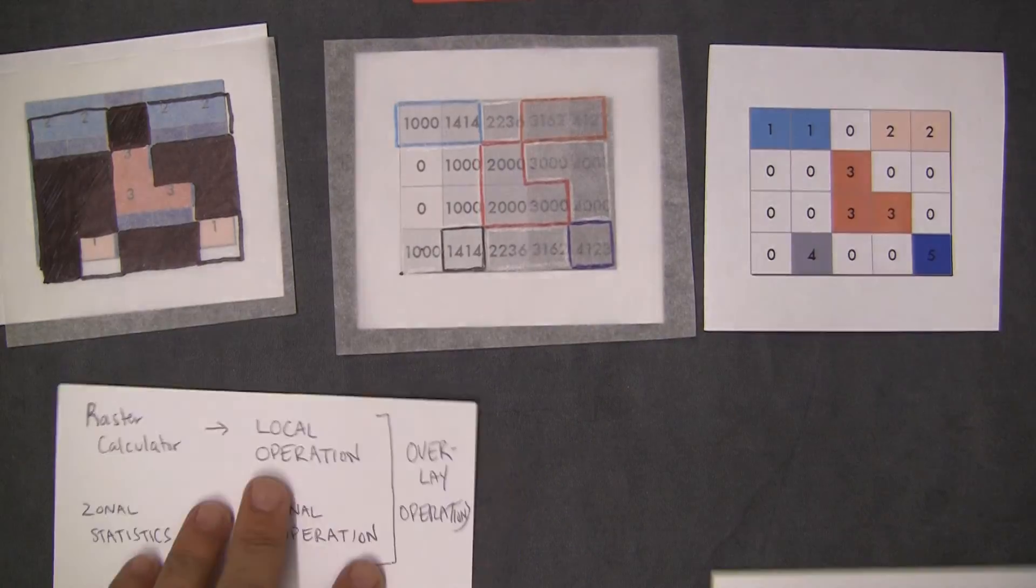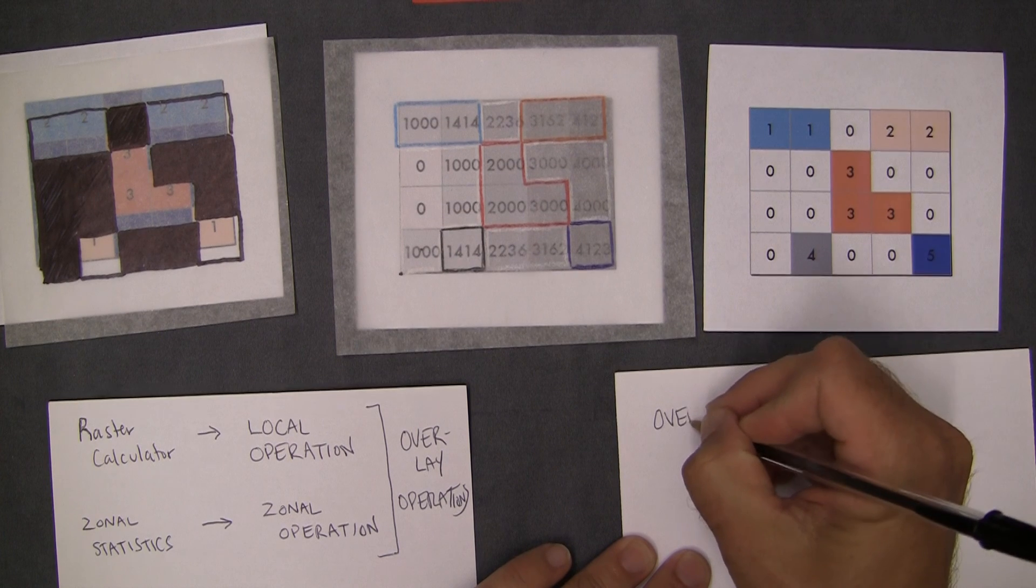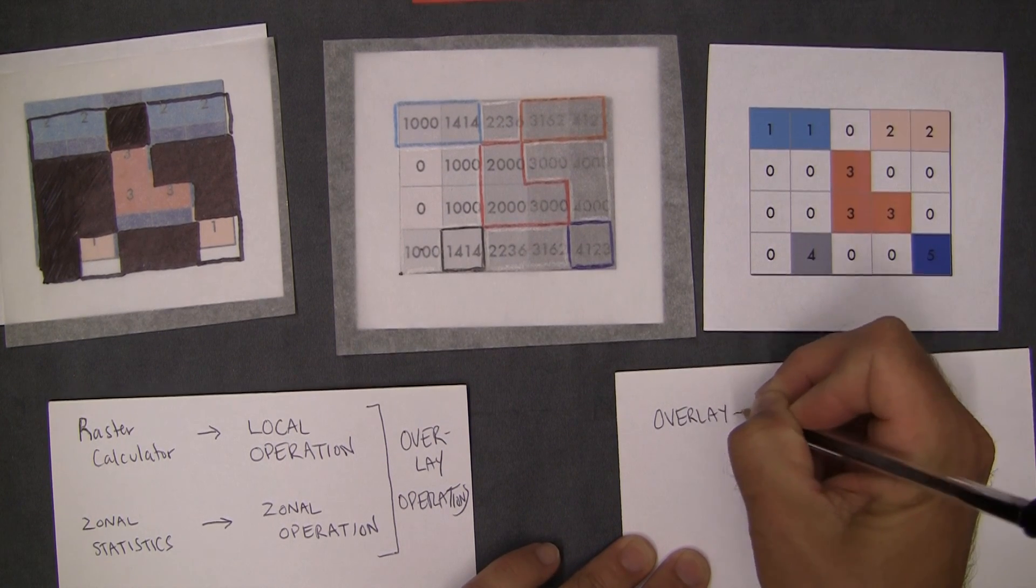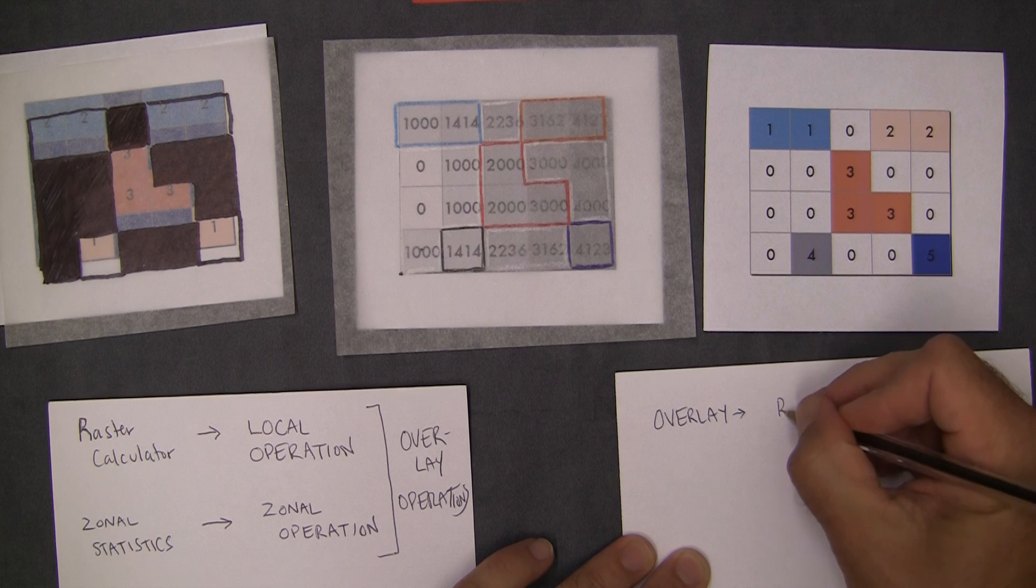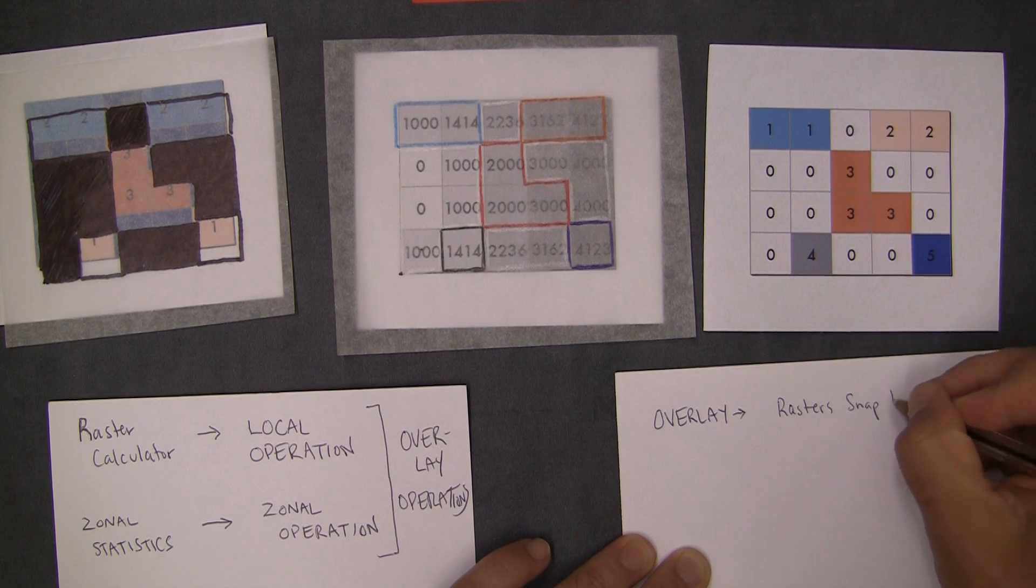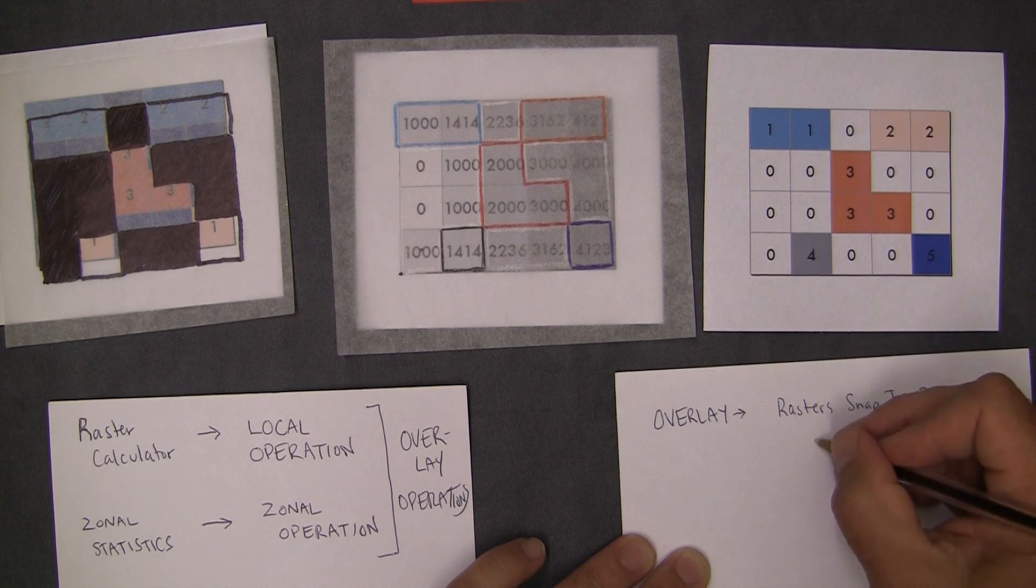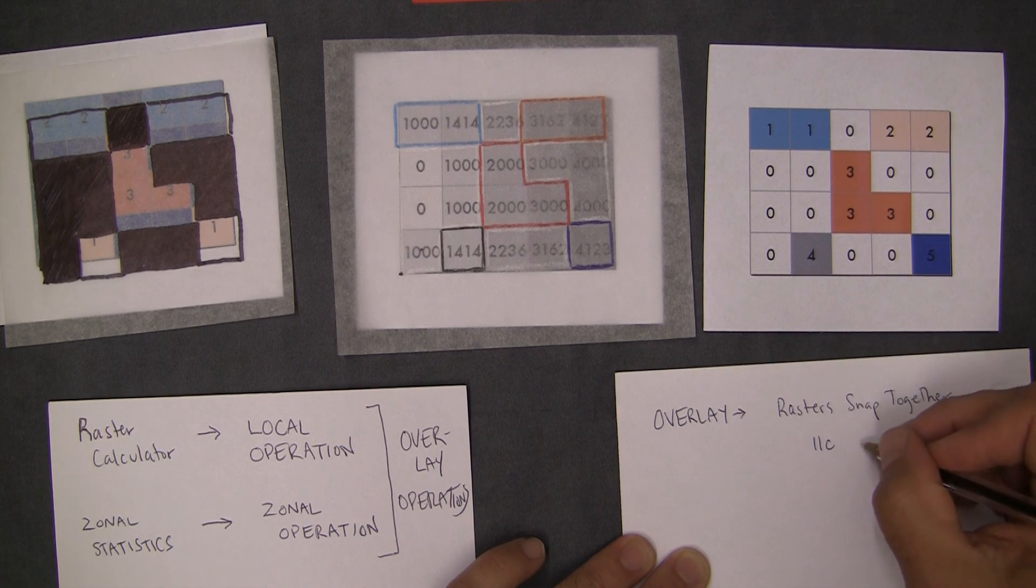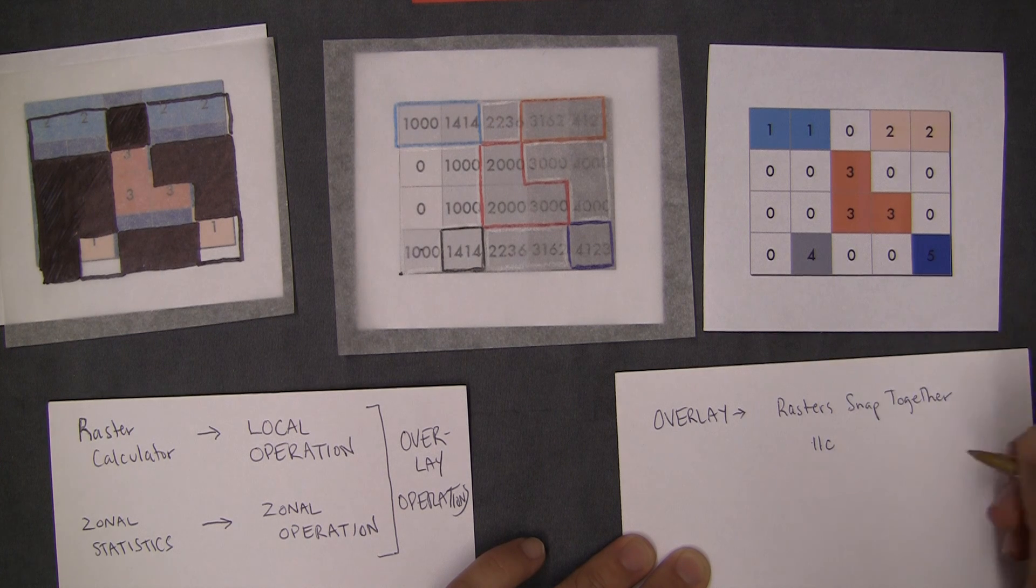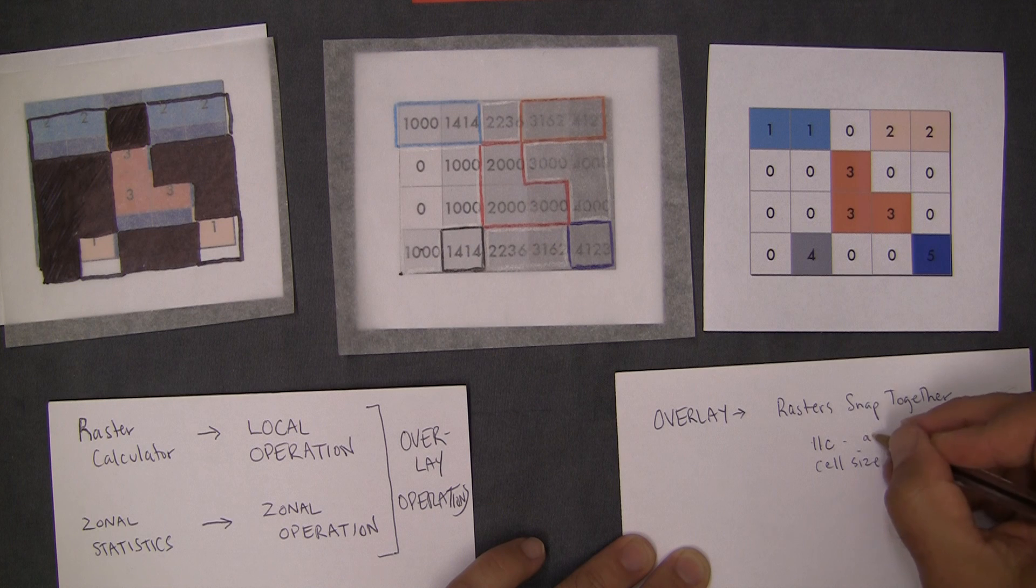And so what I'd like to say is that when you do overlay, ideally your rasters kind of snap together. And what I mean by that is that they have the lower left corner is the same, right? LLC, lower left corner, cell size.